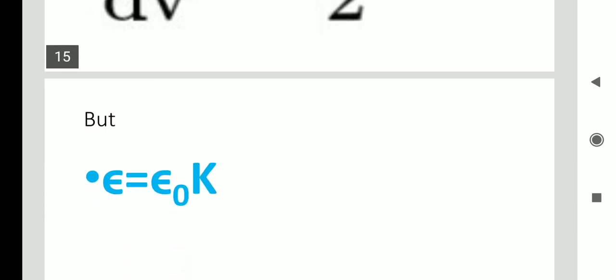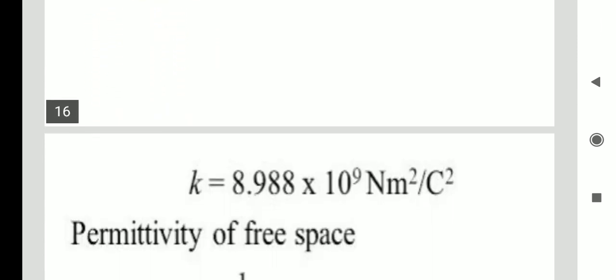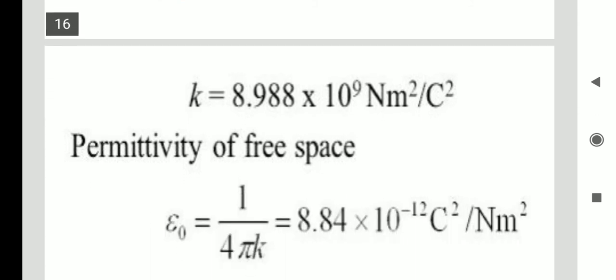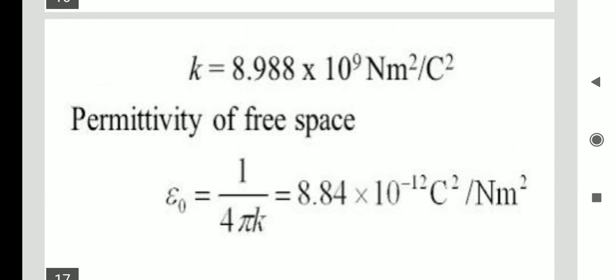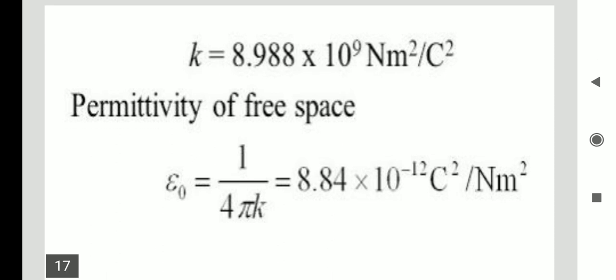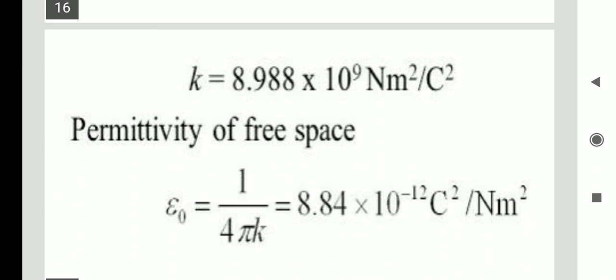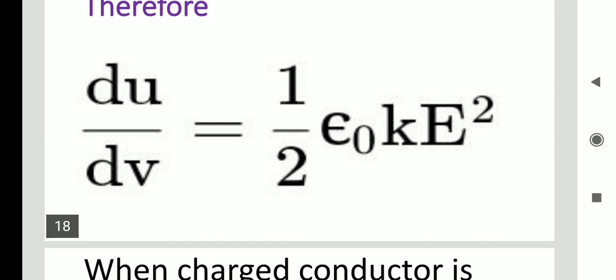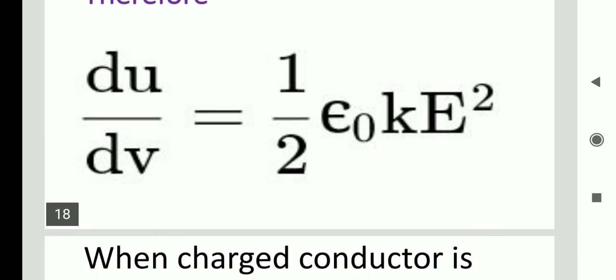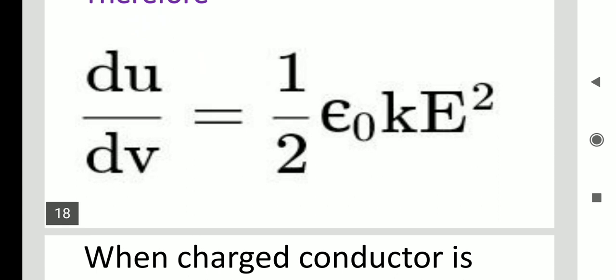Now, what is epsilon? Epsilon equals epsilon-naught times k, where epsilon-naught has units of coulomb squared per newton meter squared, and k has dimensions of newton meter squared per coulomb squared. Therefore, substituting: du/dv = ½·epsilon-naught·k·E².